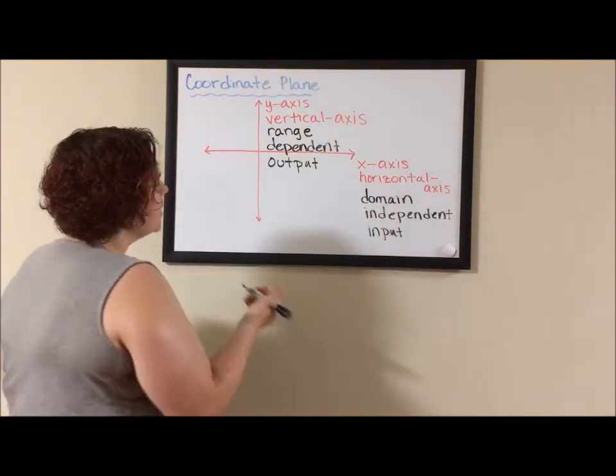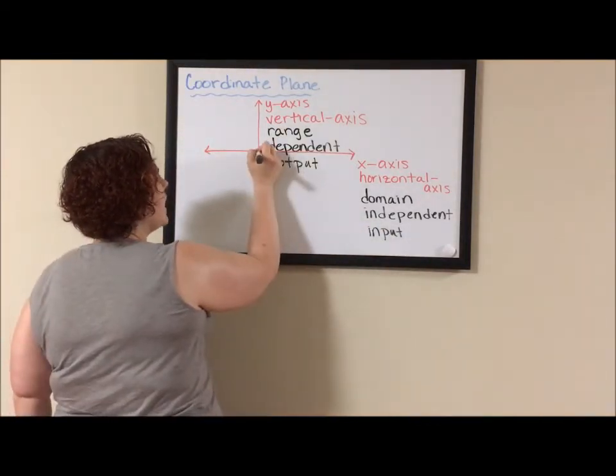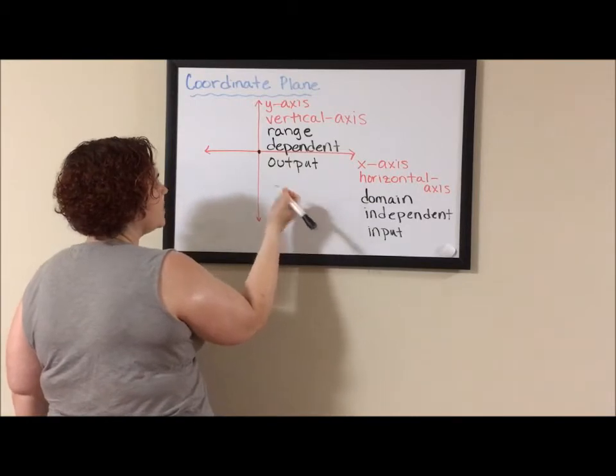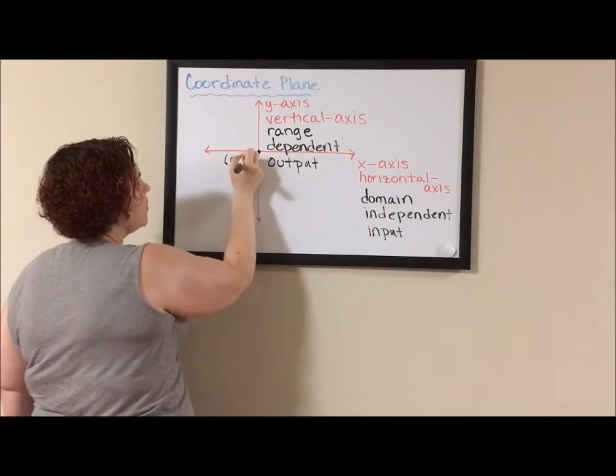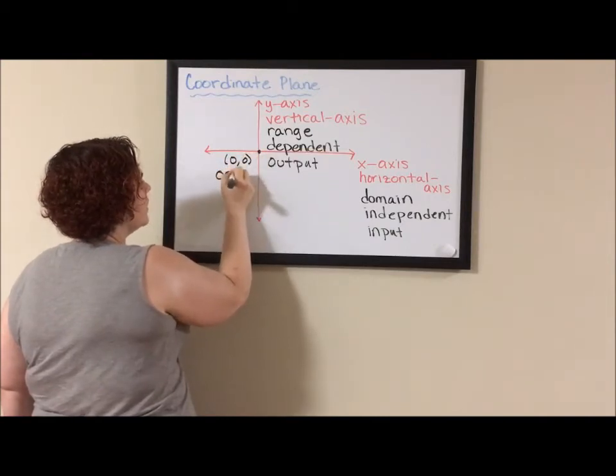Okay, so these number lines cross at each of their zero points. So we call the point of intersection zero, zero. This is the origin of the graph.